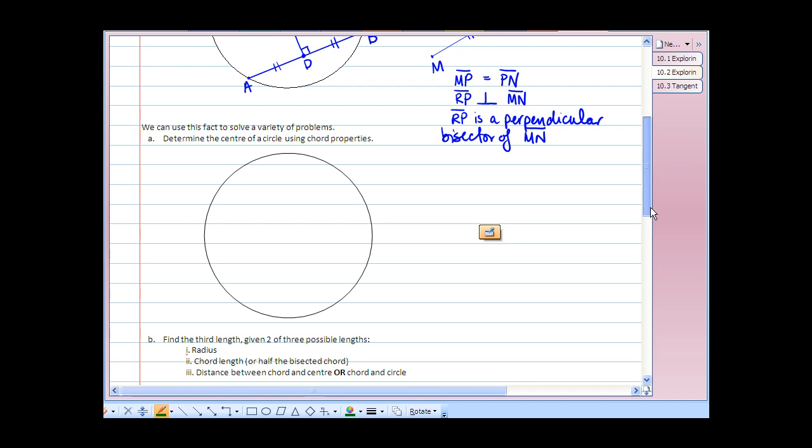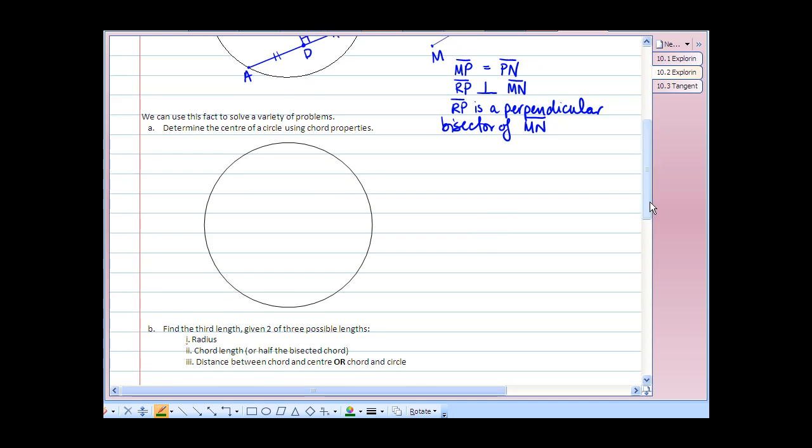So, first problem we can look at is if we wanted to find the center of a circle using chord properties. Well, what we can do then is start by drawing a chord. If we then use a ruler, or perhaps we can fold the circle in half if we are able to cut it out, and match point over point to determine where that middle of that chord is, that center point.